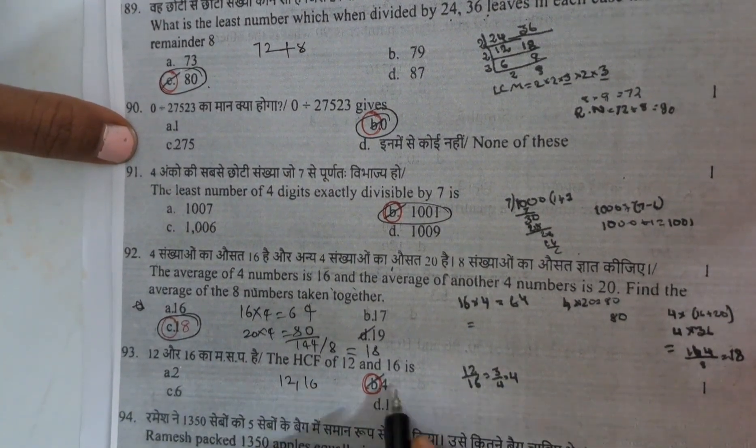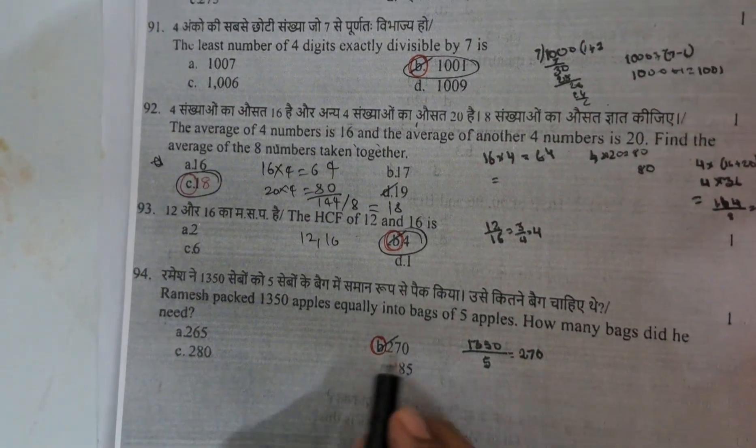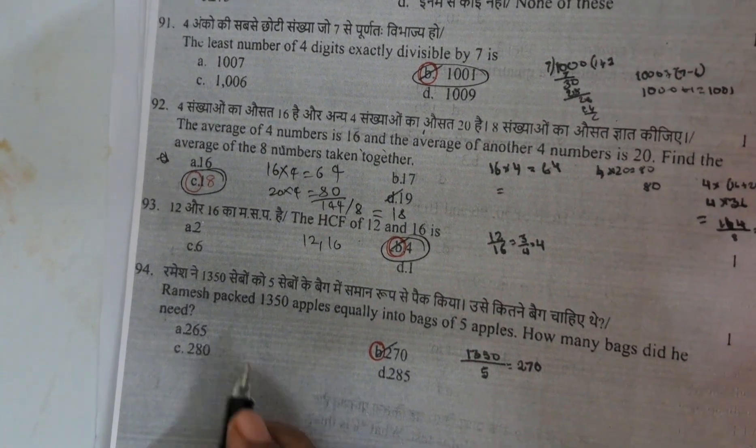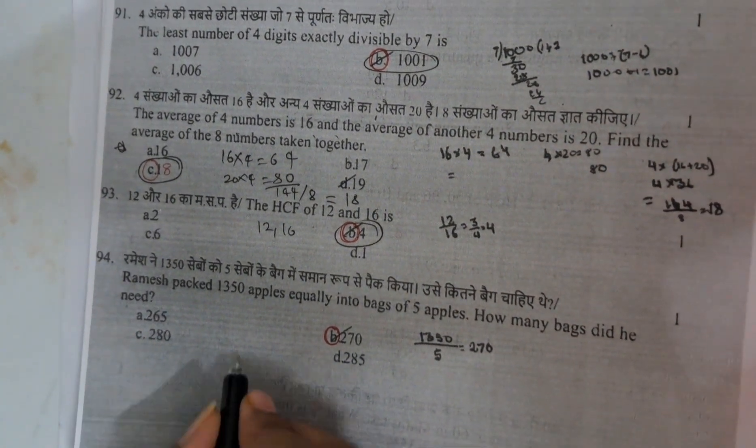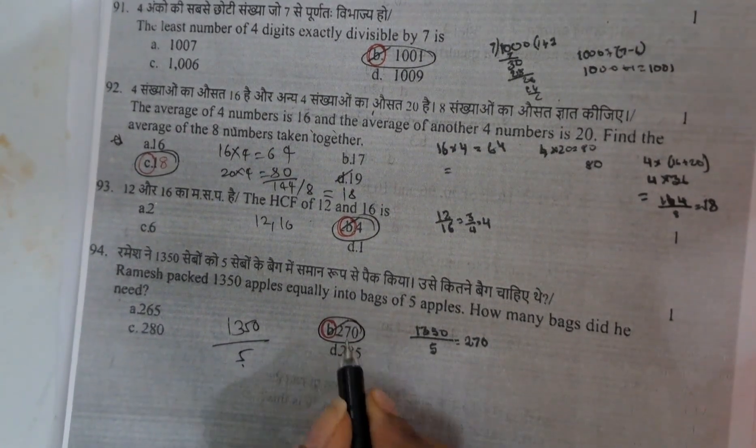And next here, HCF of 12 and 16 is 4. And Ramesh packed 1350 apples equally into bags of 5 apples. How many bags did he need? Here you need to do the division. 1350 by 5, if you do, you will get 270.